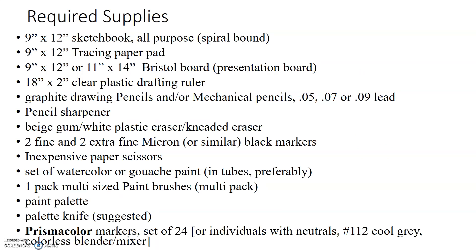Required supplies — these are absolutely essential, and I have a video posted that goes over them in detail. You'll need a 9 by 12 inch or 11 by 14 inch sketchbook — all-purpose spiral bound is suggested, fairly inexpensive. A 9 by 12 or 11 by 14 inch tracing paper pad, available at art supply stores or even Walmart. A 9 by 12 or 11 by 14 inch Bristol board, which is presentation board — this must come from an art supply store, online or in person. An 18 by 2 inch clear plastic drafting ruler — you may already have this from clothing construction, otherwise it's about two dollars on Amazon.